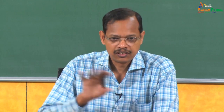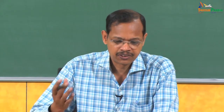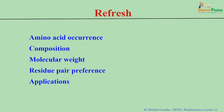Earlier we discussed different types of applications of amino acid sequences. The various parameters or features we discussed in the previous class include amino acid occurrence, amino acid composition, molecular weight, pair preference, and so on.